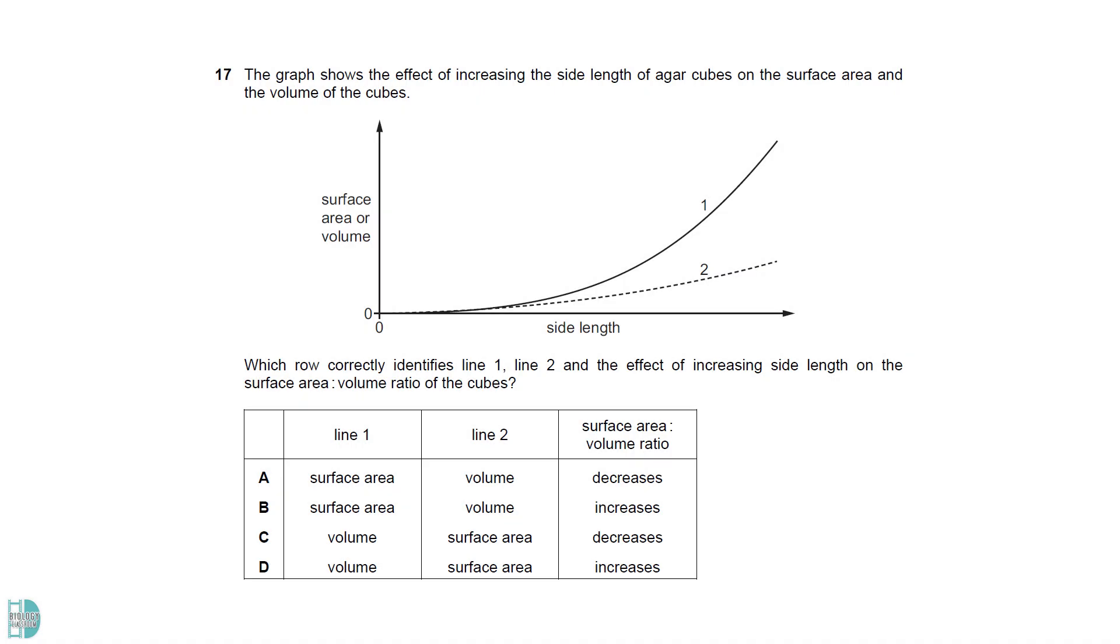As the side length increases, volume increases more rapidly than surface area. This is because volume is cube of the length, while surface area is 6 times the square of the length. As the size of a cube increases, its surface area to volume ratio decreases since surface area increases slower than volume.